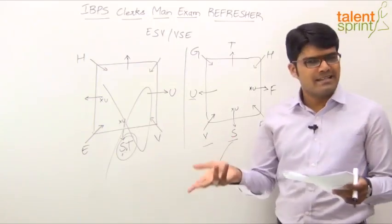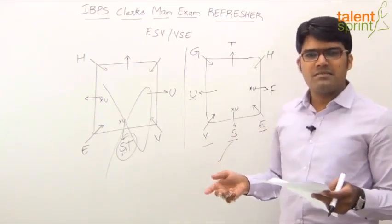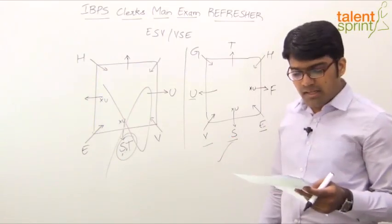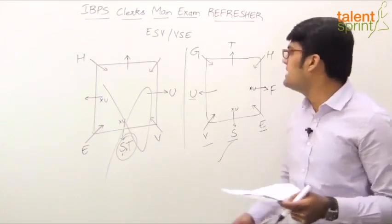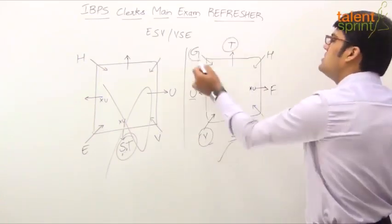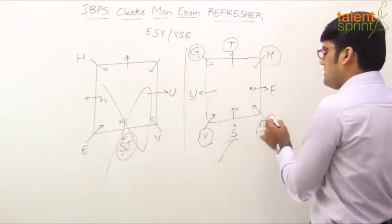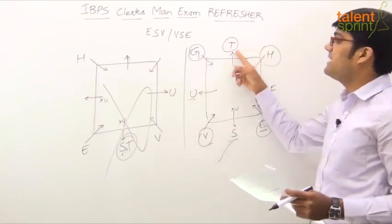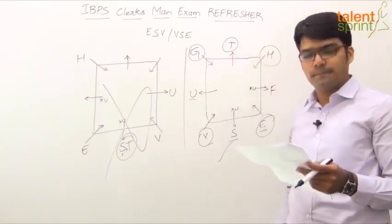4 of the following 5 are alike in a certain way based on the given arrangement and hence form a group. Which one does not belong to the group? Check it out. T, V, G, H, E. Mark these persons. T, V, G, H, E. What is common? See, 4 of these persons are at the corners except T, who is in the middle. So, T should be the answer. Option 1.